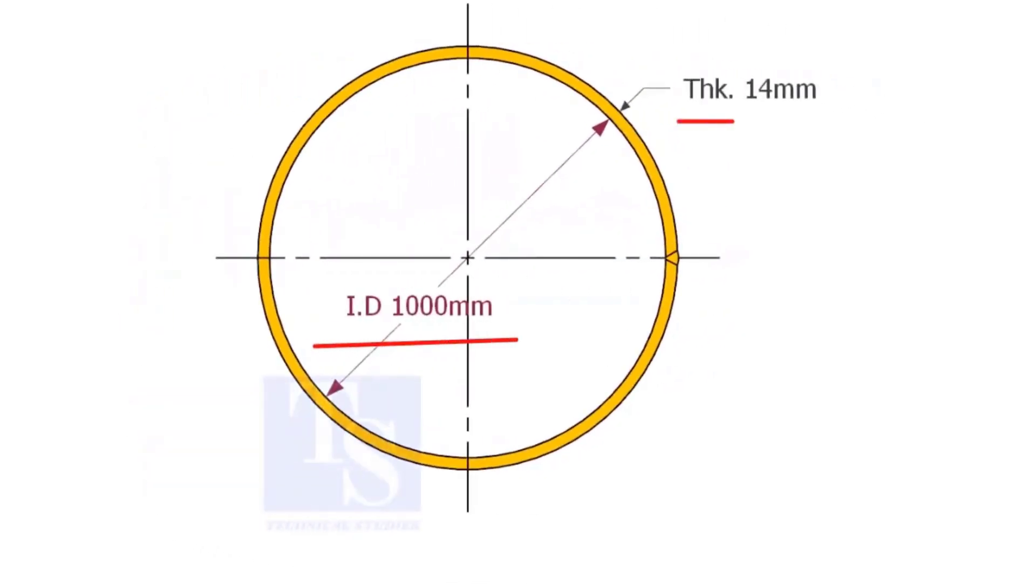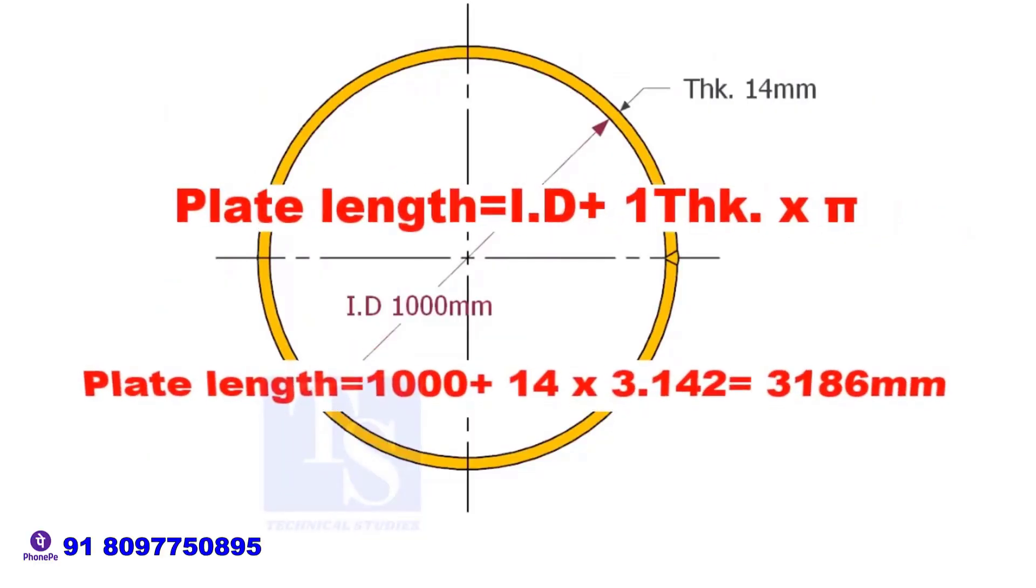Assume that the ID of the pipe is 1000 mm and the thickness is 14 mm, then add one thickness to the ID and then multiply with pi.